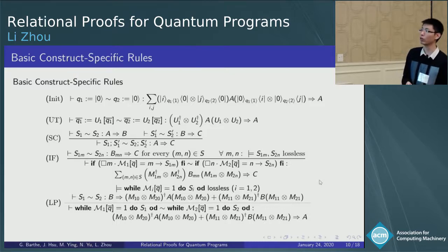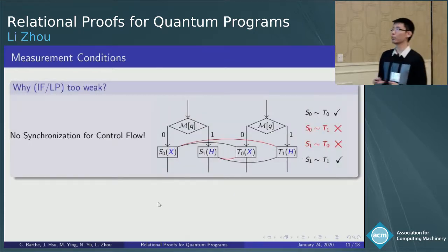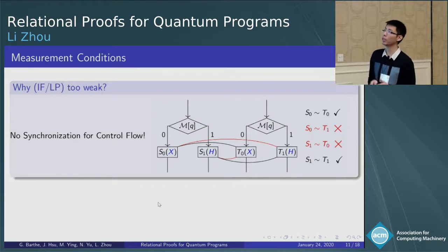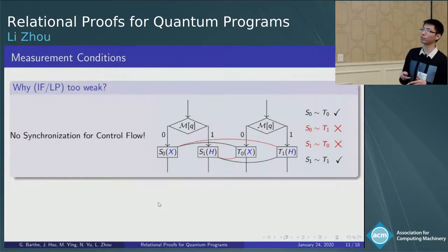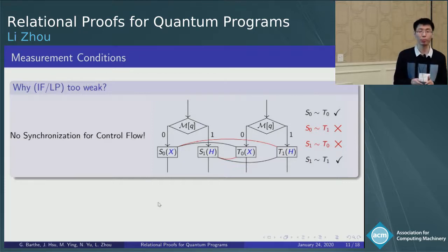There are the rules for if statement and while statement. However, it can be shown that there are some examples that the rule if and the loop are too weak to reason the desired relational properties. The key issue is that there is no synchronization for control flow if we relate two programs in a tensor product manner.